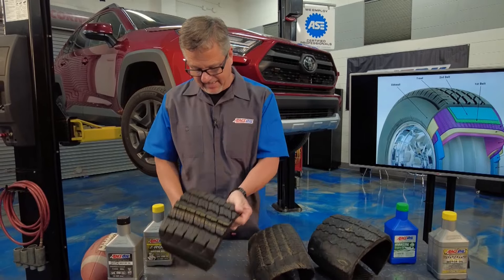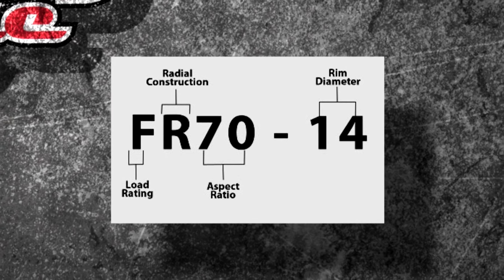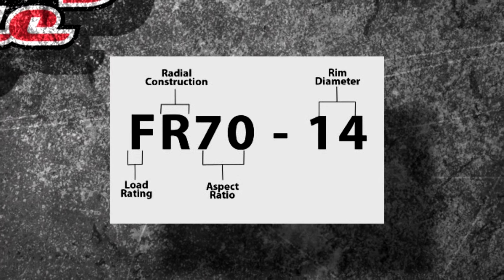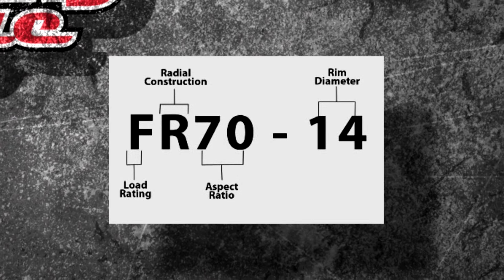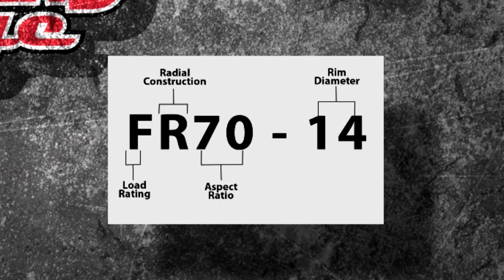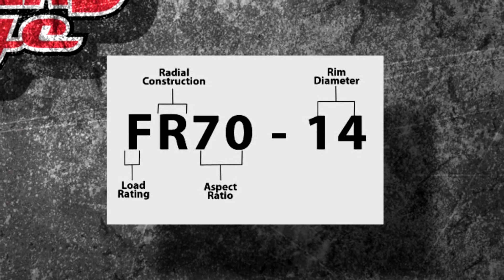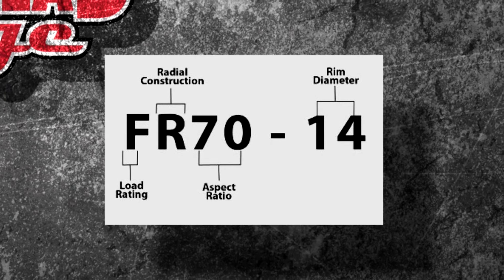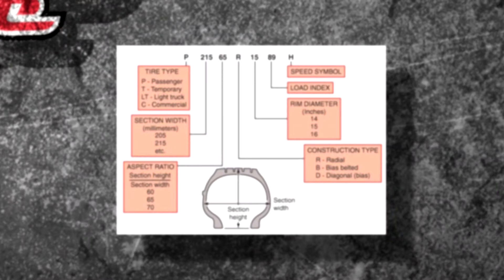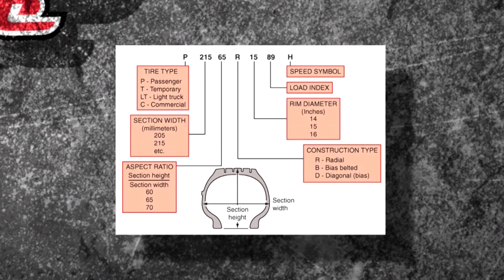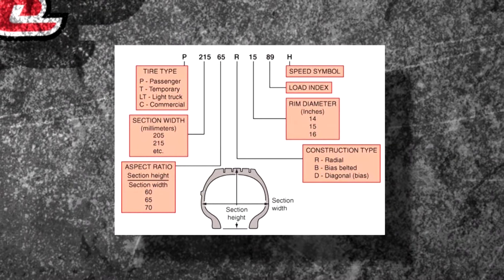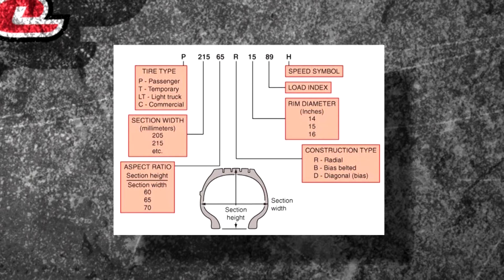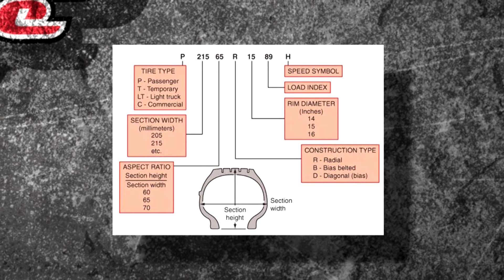As far as reading tires, the old alphanumeric system used designations like FR70-14. You can see the load rating; it was a radial, 70 is the aspect ratio, and then the rim diameter. What we're dealing with today is the P-metric system.